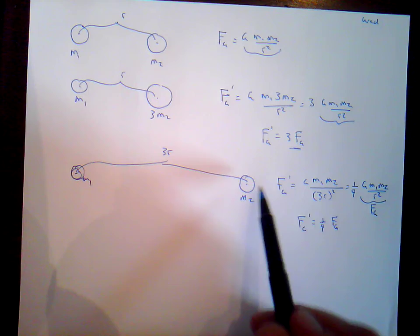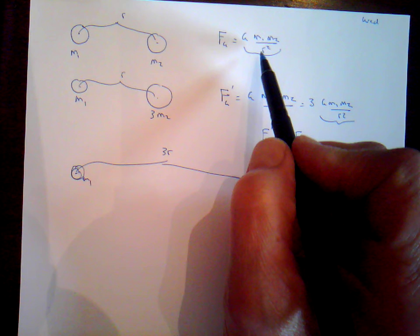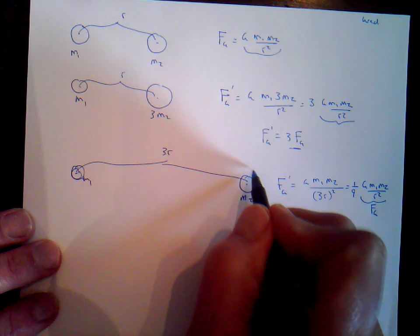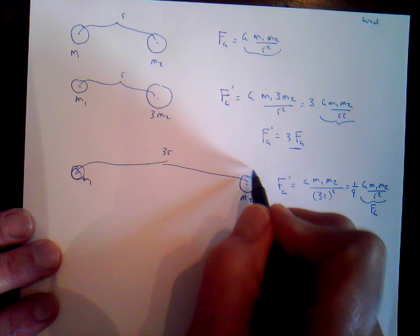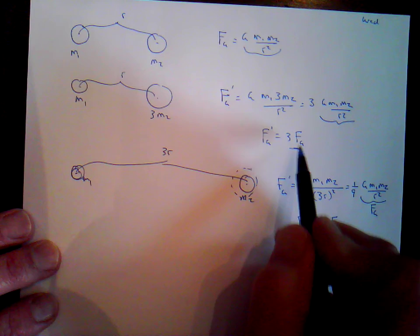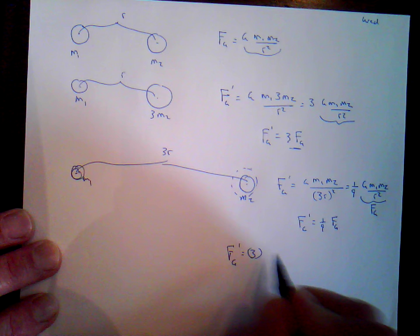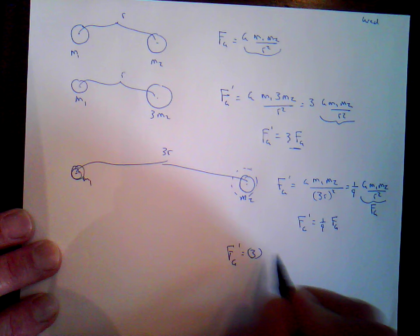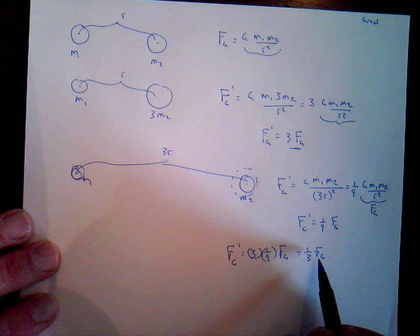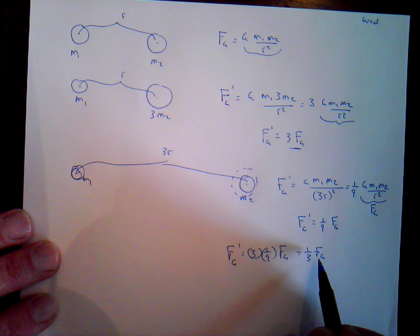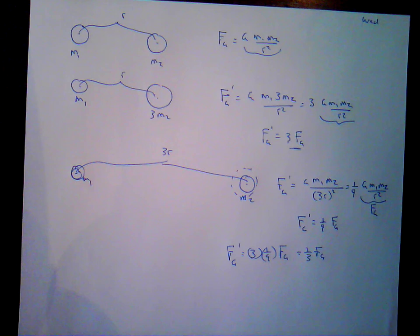If the distance increases by 4 times, 4 squared is 16, invert that — that's one-sixteenth. Inverse-square relationship. So the new force at 4 times the distance would be one-sixteenth of the original. Now what if we tripled the mass and tripled the distance? Tripling the mass causes the force to triple; tripling the distance causes the force to change by one-ninth. Combined: 3 times one-ninth equals one-third. So the new force would be one-third of the original force. That should help you solve problem number 1 on the practice sheet.